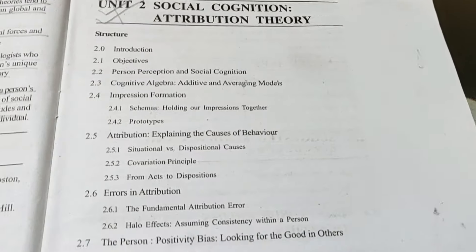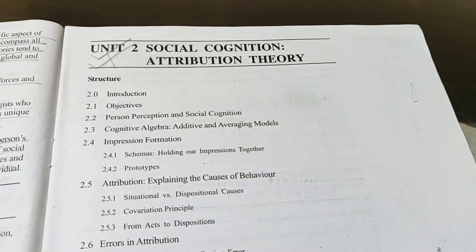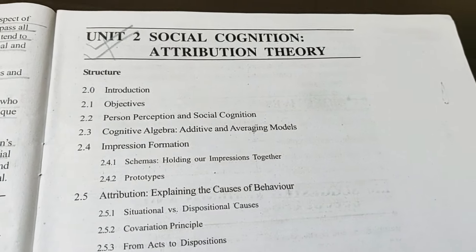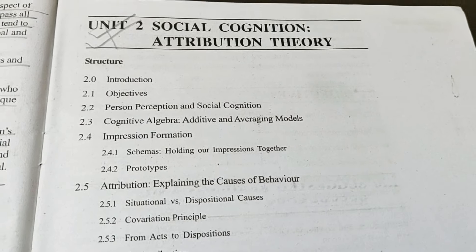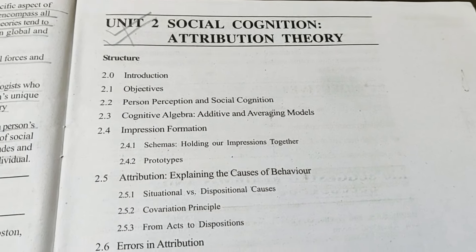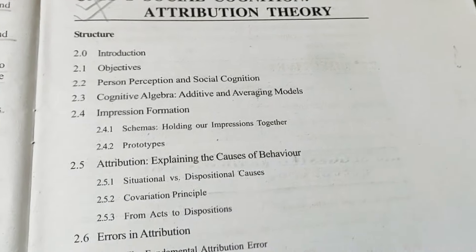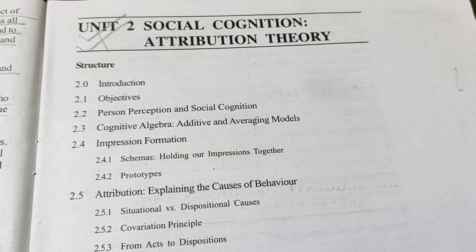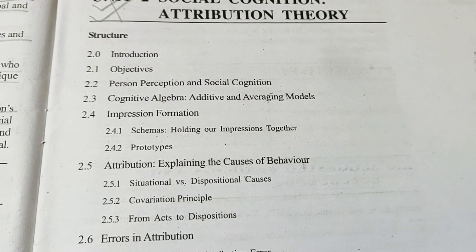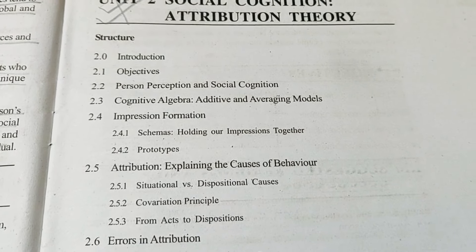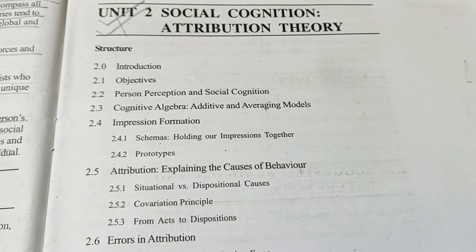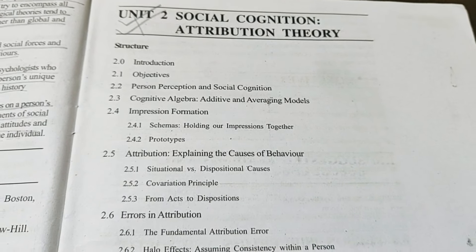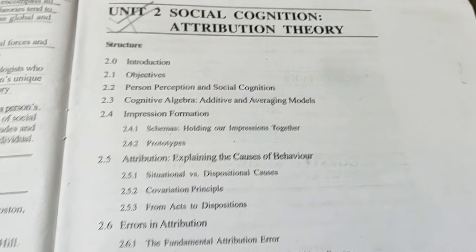Friends, this chapter is about social cognition. Social cognition means how society — our thoughts, our behavior, our personality — and how we deal with it. We will study all of these things.